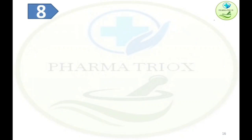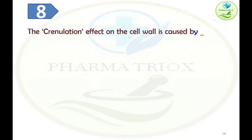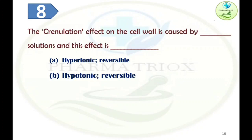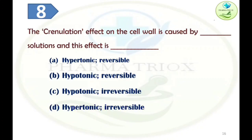Question eight: The crenation effect on cells is caused by blank solutions, and this effect is called blank. Option A: hypertonic and reversible. Option B: hypotonic and reversible. Option C: hypotonic and irreversible. Option D: hypertonic and irreversible. The correct answer is Option A — crenation is caused by hypertonic solutions and the effect is reversible.